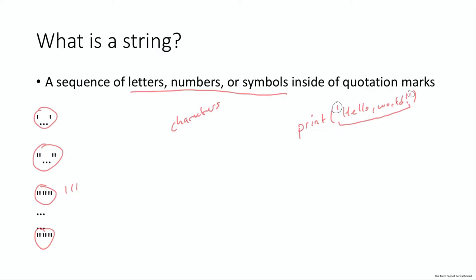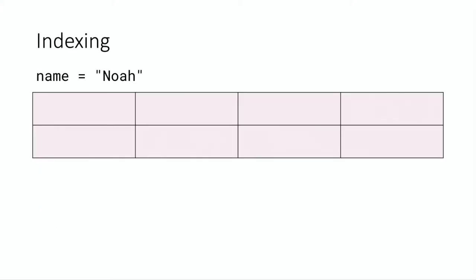Let's look at how strings work. The first thing we should talk about is indexing of strings. In a string, here's an example variable: name equals Noah, the string Noah — a simple variable. We have a decent amount of experience with variables at this point, so there's nothing tricky there.